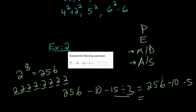And then now we can go to addition and subtraction. 256 minus 10 would be 246, minus 5 would be 241.